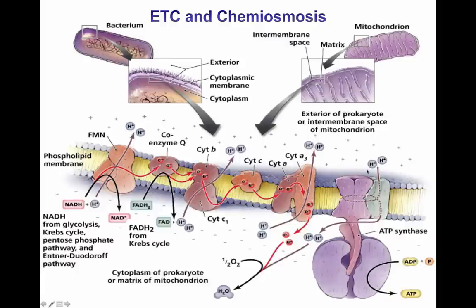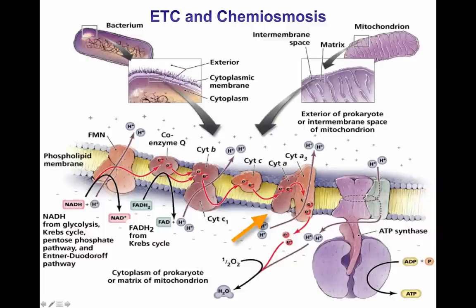This image compares the electron transport chain and chemiosmosis systems in eukaryotes and prokaryotes. In eukaryotes, the membrane shown is the inner membrane and the intermembrane space of the mitochondria. In bacteria, this corresponds to the plasma membrane and the periplasmic region — the region between the inner membrane and the cell wall of gram-negative bacteria. Similar molecules are found: complex one, complex two, complex three, and complex four. Complex one is where NADH donates its electrons and serves as a proton pump to bring protons into the intermembrane space or periplasm.